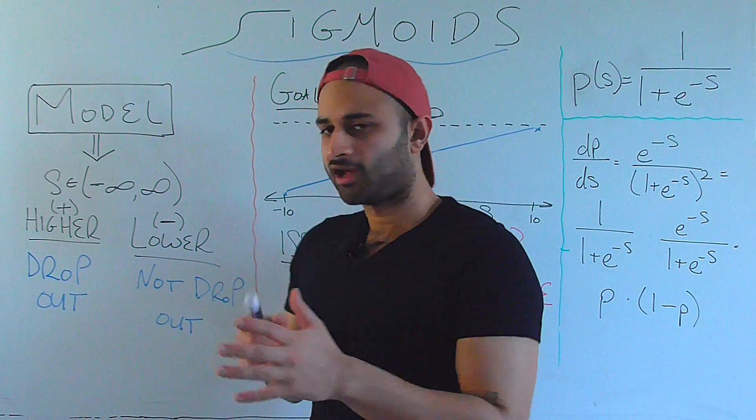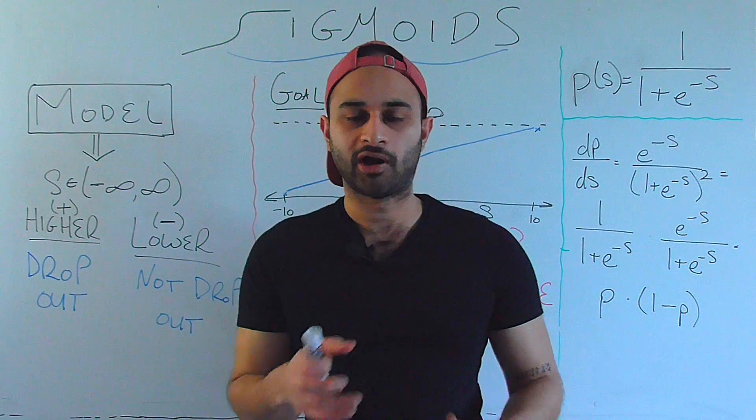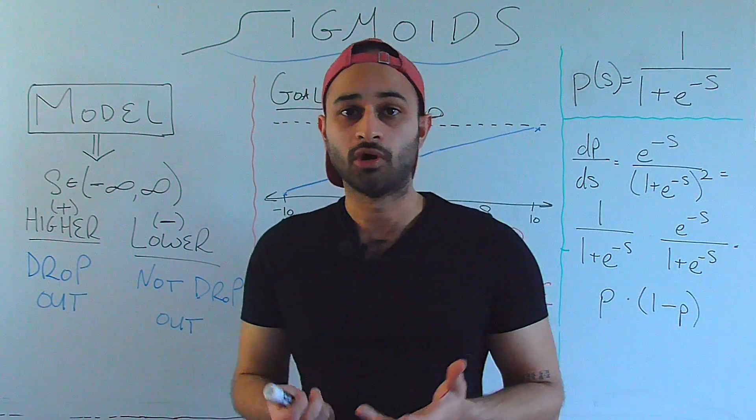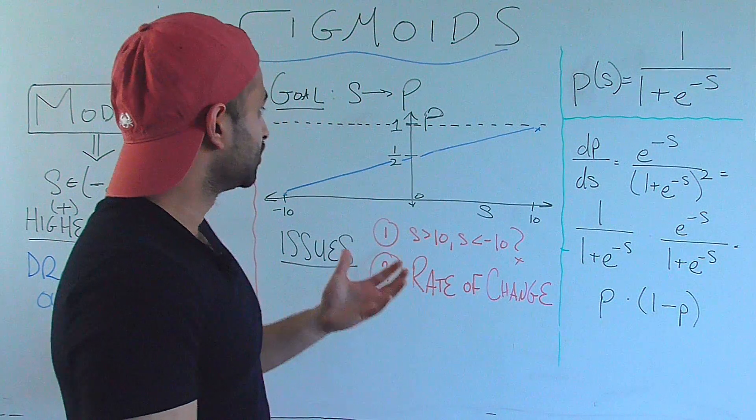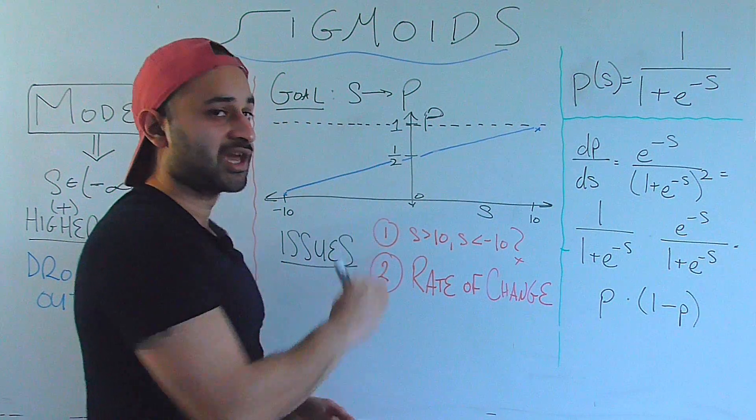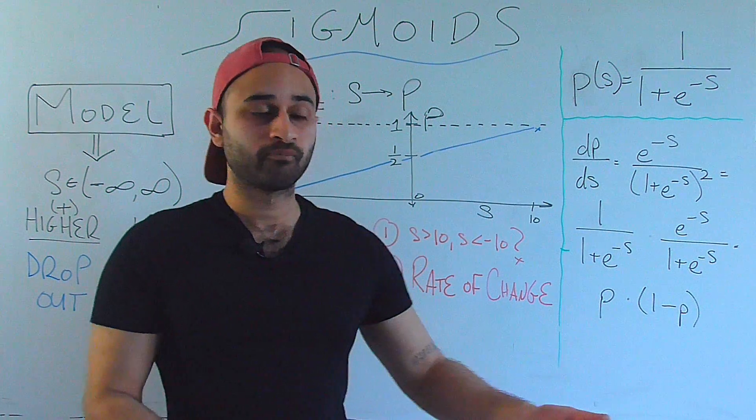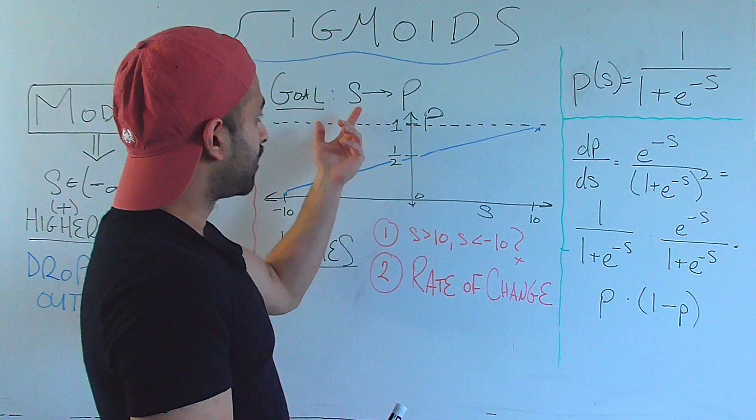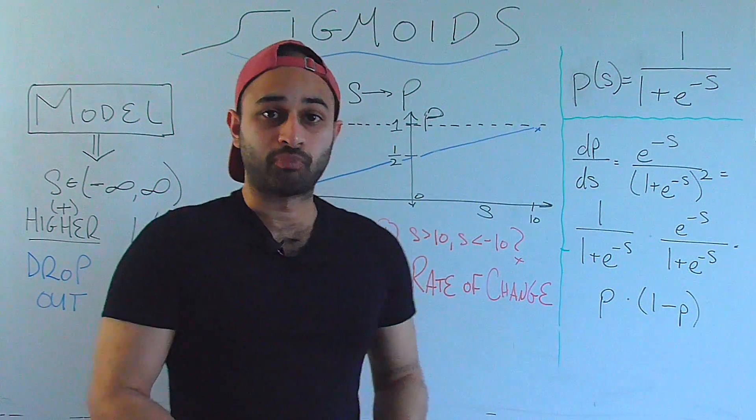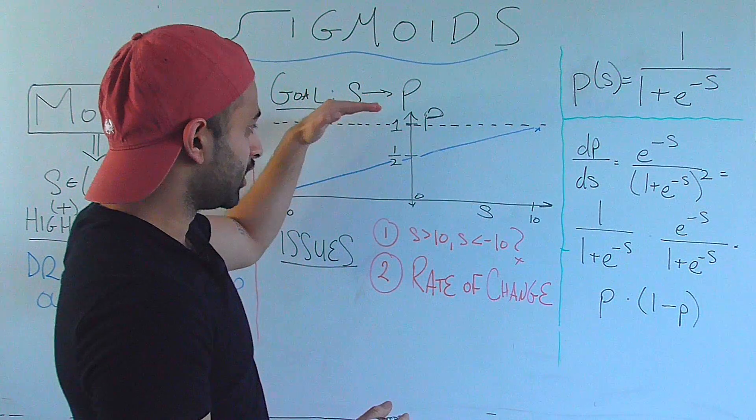Now currently the score being unbounded is not super helpful in comparing one student with another. So the goal throughout this video is going to be converting the score, which is again between negative infinity and infinity, just some unbounded real number, to a probability p, where probabilities of course have to be bounded between 0 and 1.